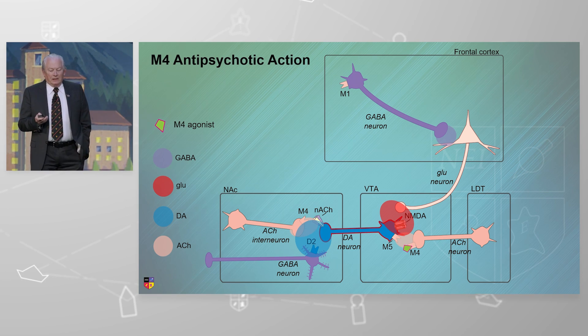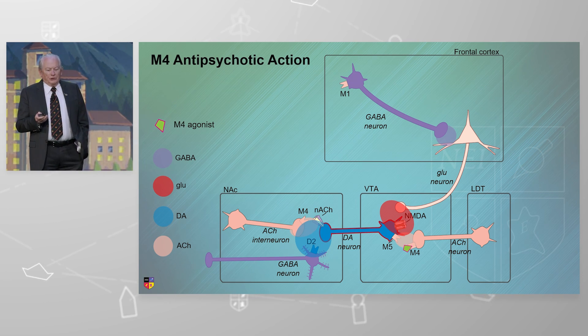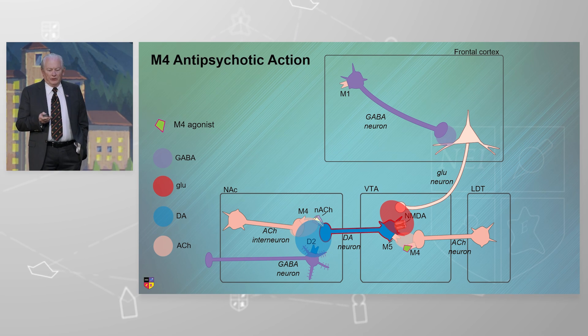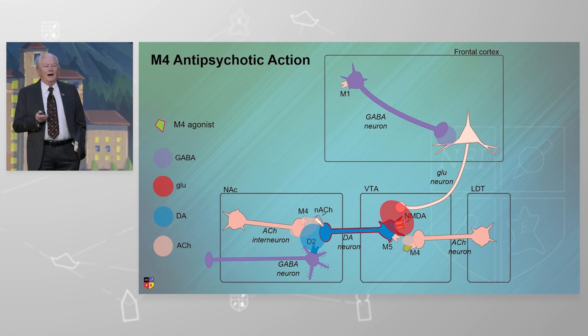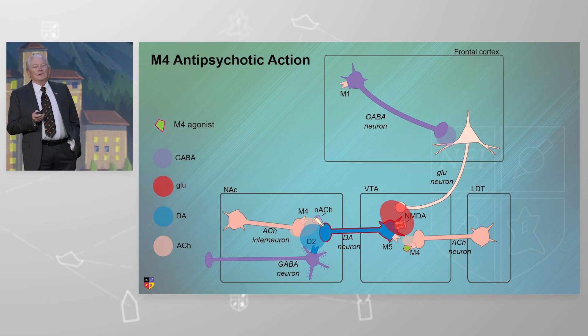Here comes a cholinergic agonist for M4. It's going to stimulate inhibition. What's going to happen to the acetylcholine cloud there, the pink cloud, higher or lower? Lower. What's going to happen to the dopamine cloud or the other dopamine neuron? Ah, my delusions are already fading.